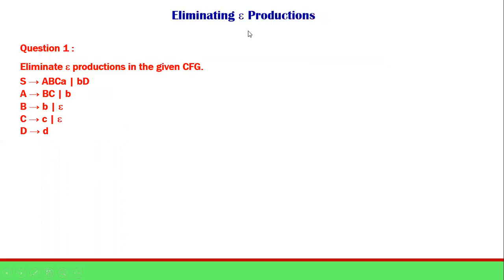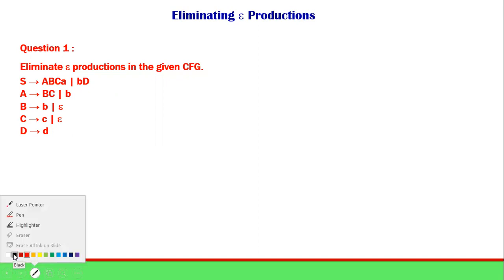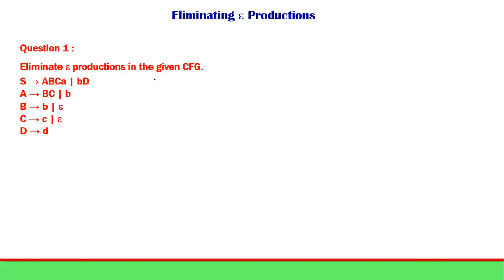Let's see how to eliminate the epsilon productions. We have been given a question with variables S, A, B, C, D and terminals a, b, c, d. Before you start writing up the elimination of epsilon productions or any productions, check out what are the different variables given.